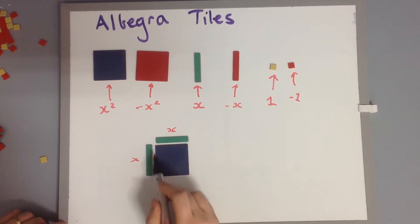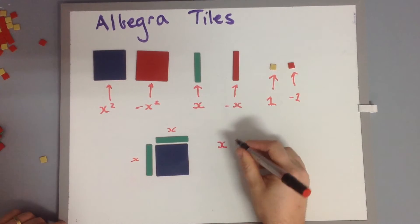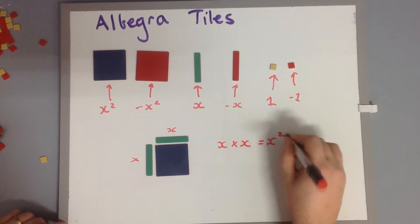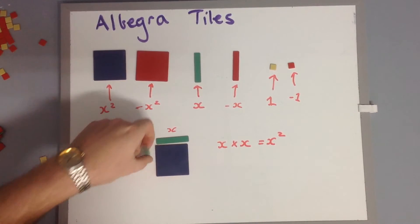So these side lengths, x and x - to find the area we say we've got x times x, which equals x squared. Now what I can do is flip one of these over.